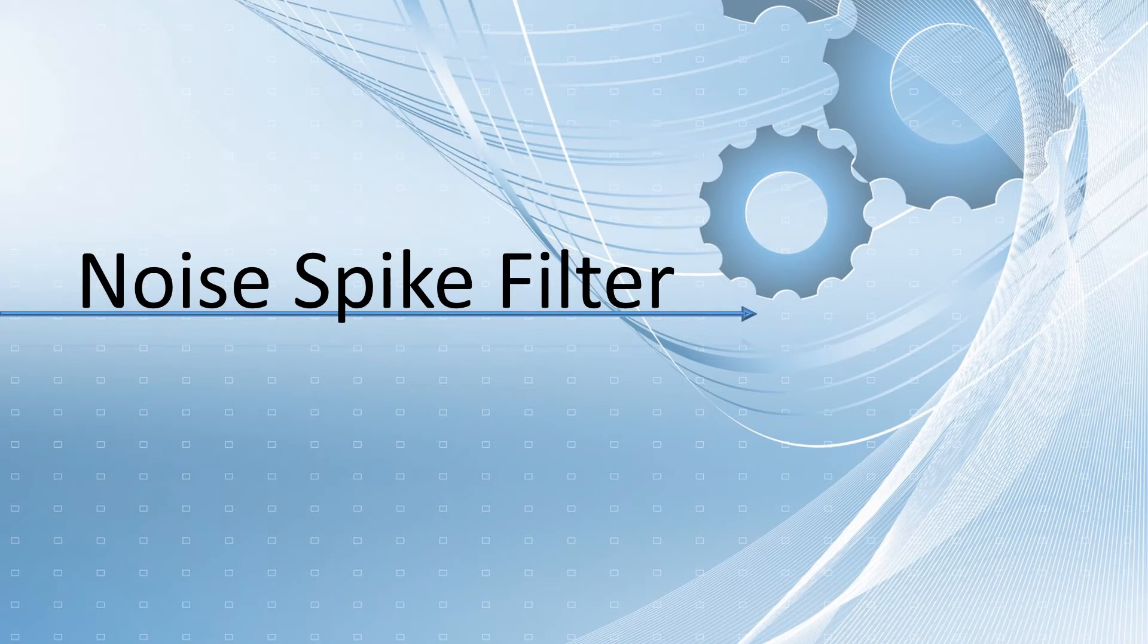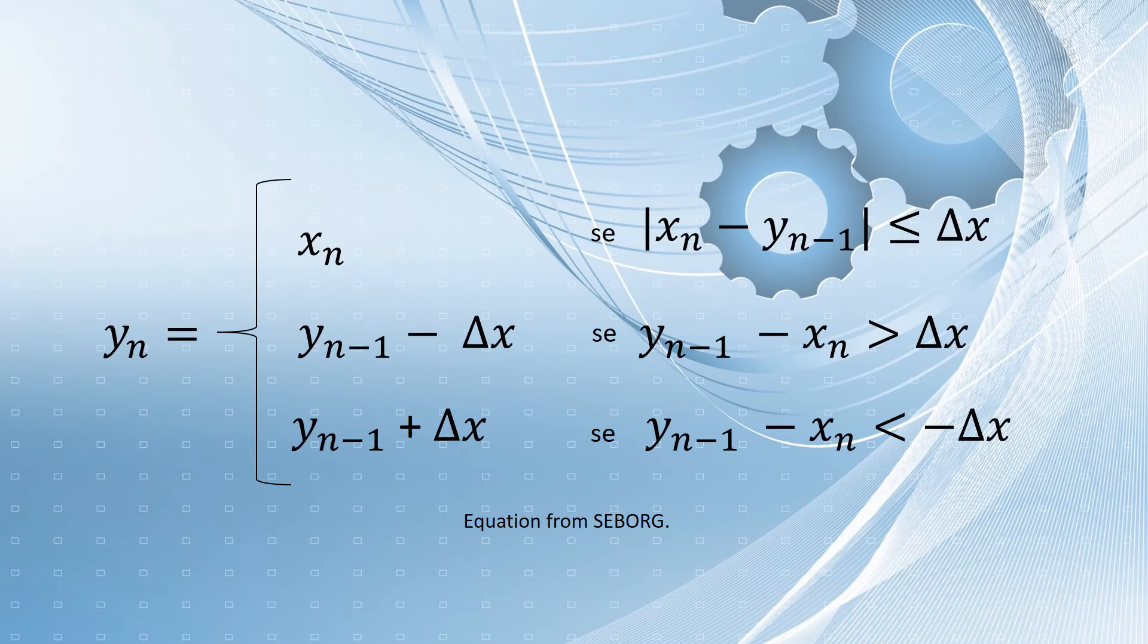If a noise measurement changes suddenly by a large amount and then returns to the original value at the next sampling instant, a noise spike is said to occur. To avoid that, the noise spike filter is used. Noise spike filters are used to limit how much the filtered output is permitted to change from one sampling instant to the next. If delta x denotes the maximum allowable change, the noise spike filter can be written as the equation shown.